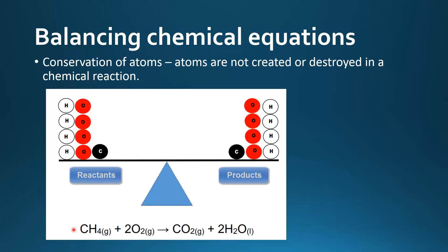Let's look at an example. Here we have a chemical equation: this is methane, this is oxygen, this is carbon dioxide, and this is water. We are burning methane in oxygen to produce carbon dioxide and water — this is known as a combustion reaction. According to the conservation of atoms, the number of atoms in the reactants on the left side must equal the number of atoms in the products on the right side.